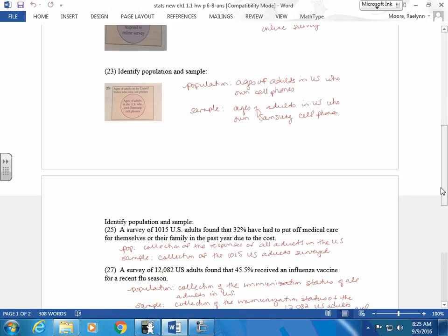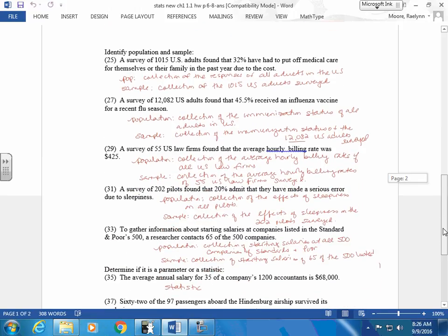Again, here's another one. Population is the big box. Ages of adults in the United States who own cell phones. And the sample is the little box. Ages of adults in the United States who own Samsung cell phones. A subset of your cell phones. We're good so far? Not difficult, but we use populations and samples throughout this entire course. So it's important that you stay on track with the populations and the samples.